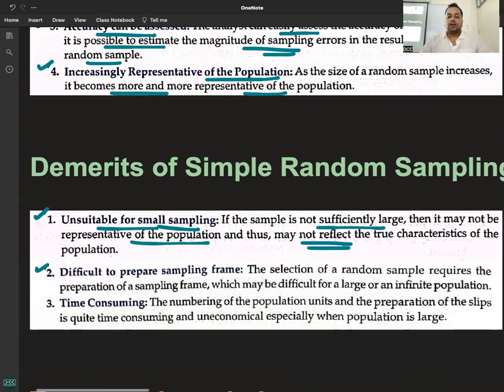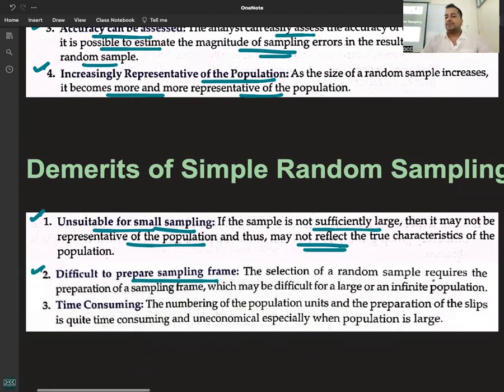Difficult to prepare sampling frame. The selection of a random sample requires the preparation of a sampling frame, which may be difficult for a large or infinite population.